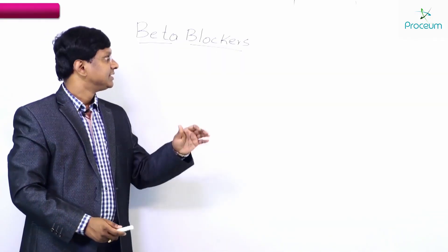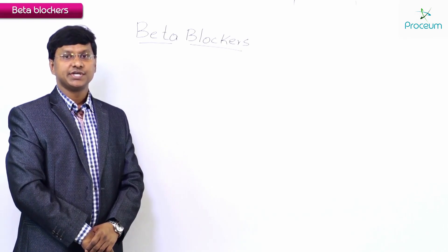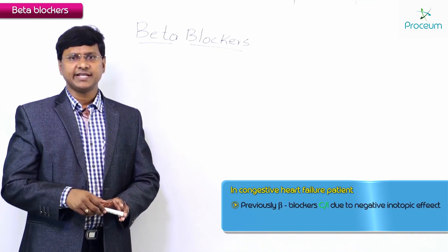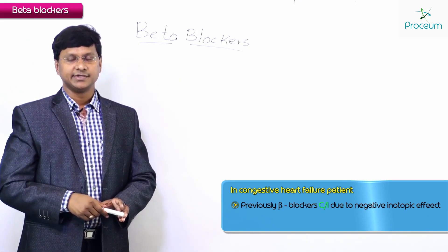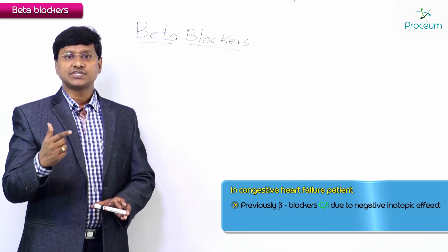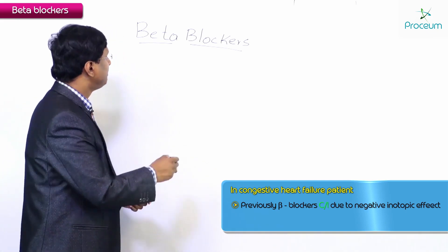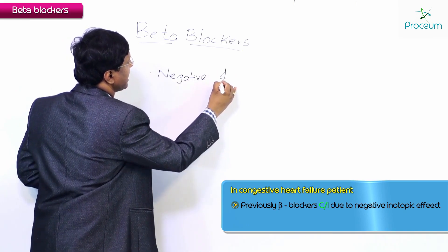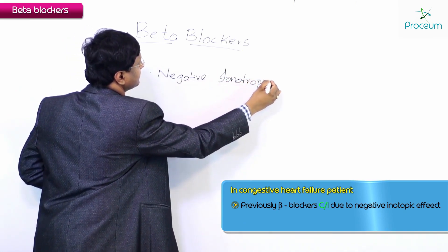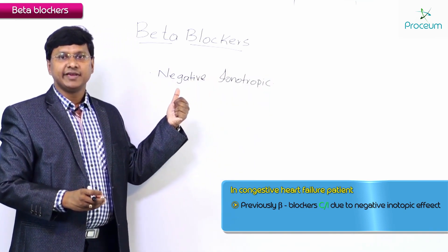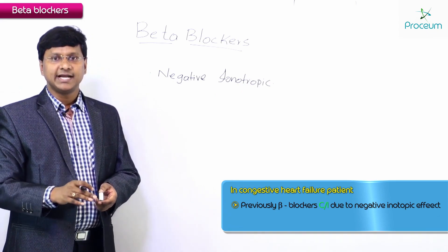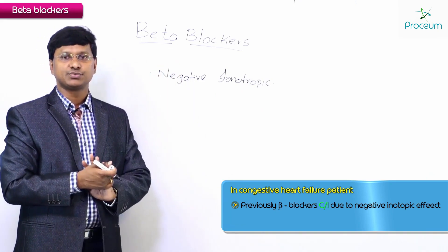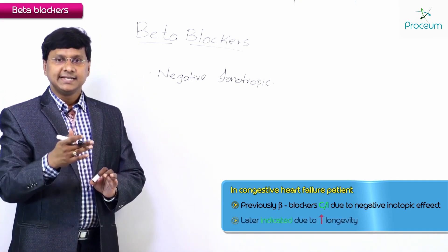Let me discuss beta blockers usage in patients with congestive heart failure. Previously, beta blockers were considered contraindicated in patients with congestive heart failure because beta blockers have a negative inotropic effect. Because of this negative inotropic action, it was found that they would further suppress cardiac activity, which is why they were considered contraindicated.